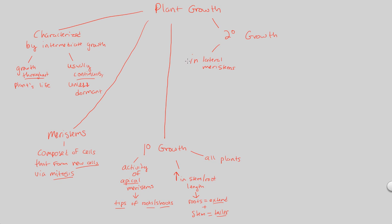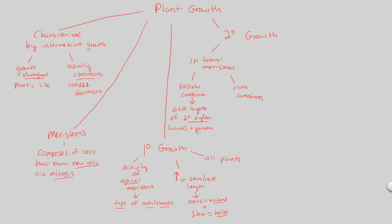Instead of having the tips of roots and shoots as in the apical meristems, the lateral meristems consist of two structures: either the vascular cambium or the cork cambium. In the vascular cambium, mitotic divisions add layers of secondary xylem and also phloem. Secondary xylem is essentially wood, so secondary xylem and phloem are produced through lateral meristemic vascular cambium growth.